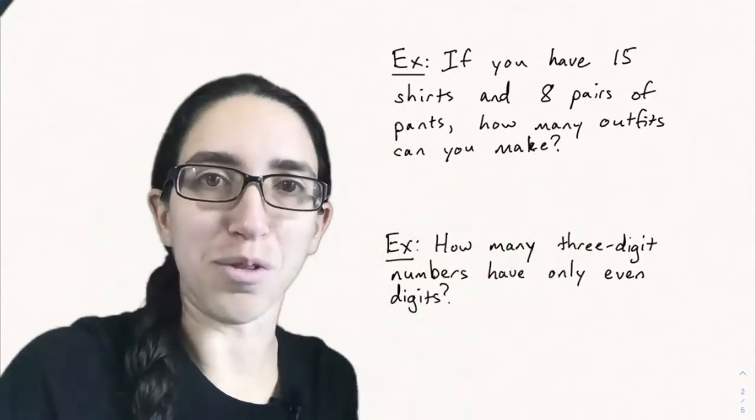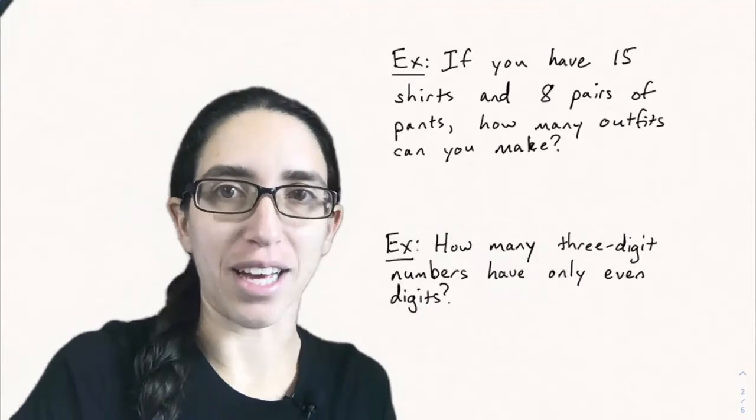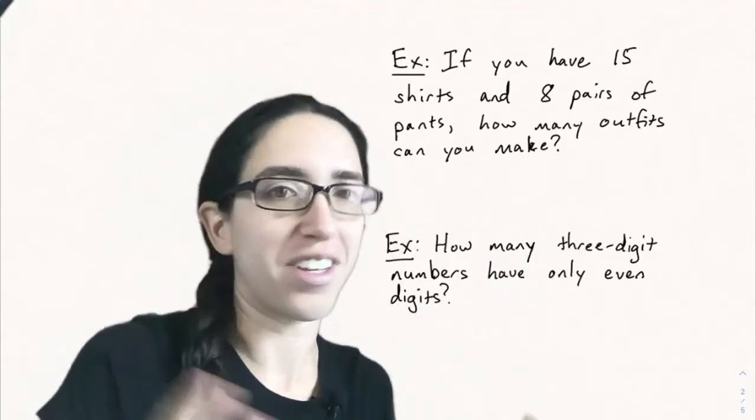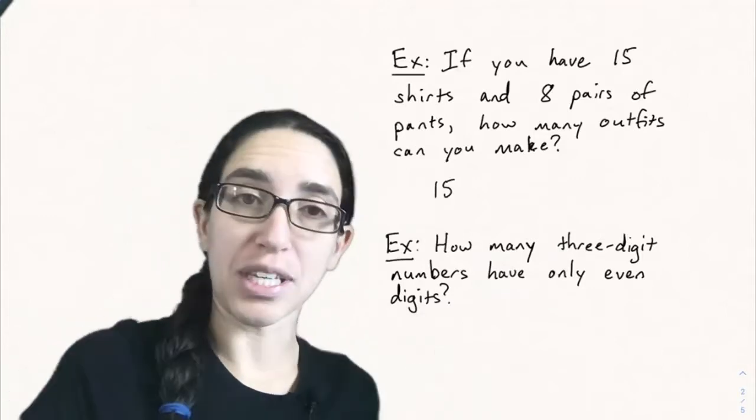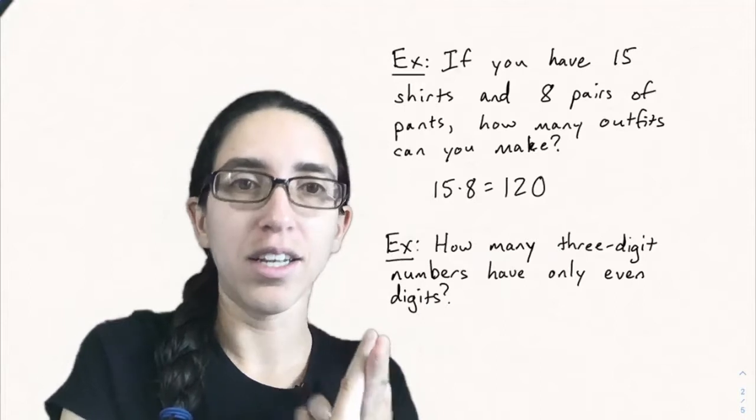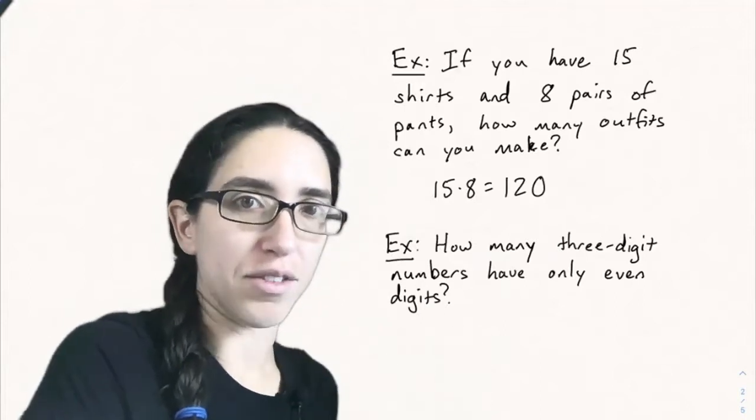Let's see how the multiplication principle comes up in other contexts. Here's a classic example. If you have 15 shirts and eight pairs of pants, how many outfits can you make? An outfit of course consisting of one shirt and one pair of pants. By the multiplication principle we have to choose one thing out of 15 and one thing out of eight which is 15 times 8 and that gives you 120.